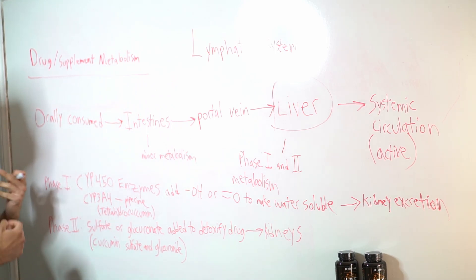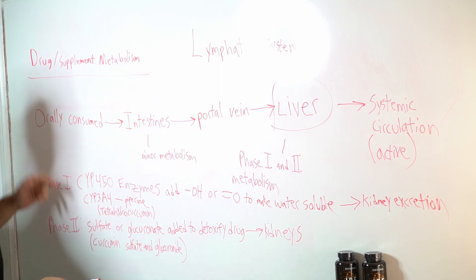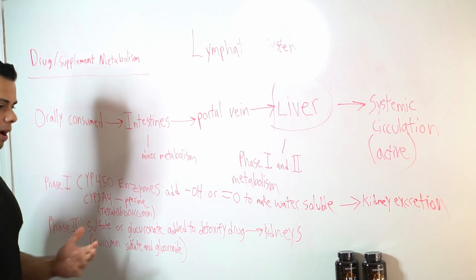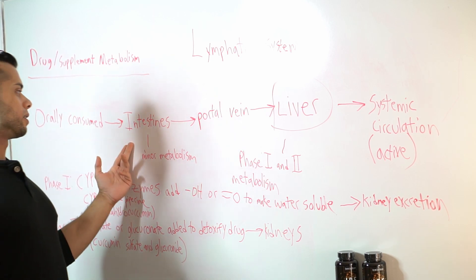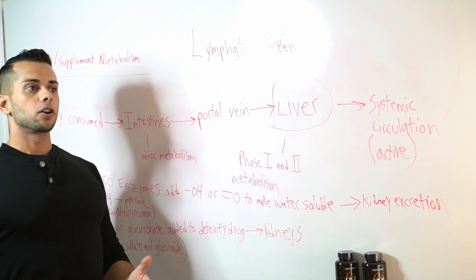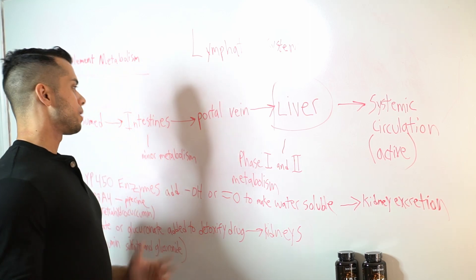Now here we have a typical example of a dietary supplement that is consumed orally. The route this dietary supplement takes is that it first goes through the intestines where it does undergo some minor metabolism, but nothing too drastic.